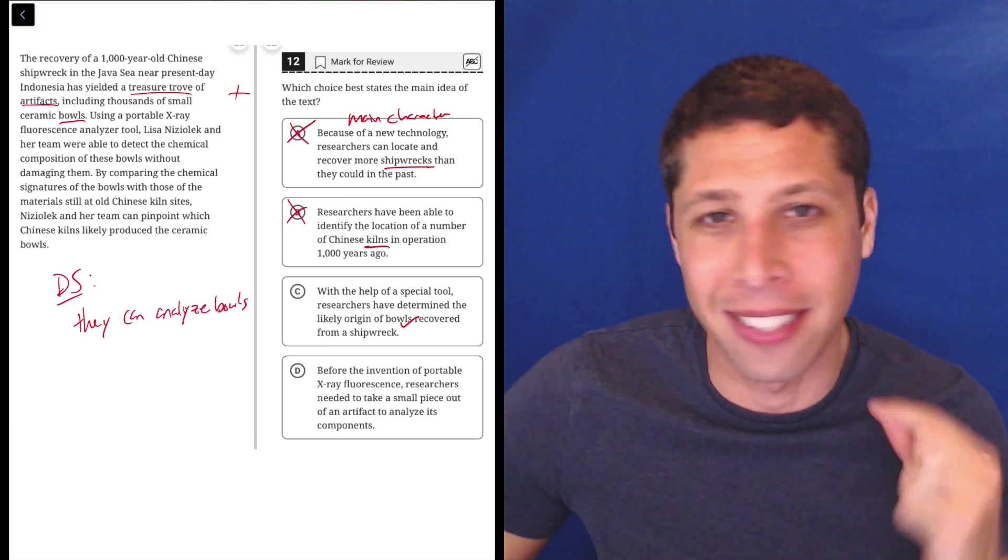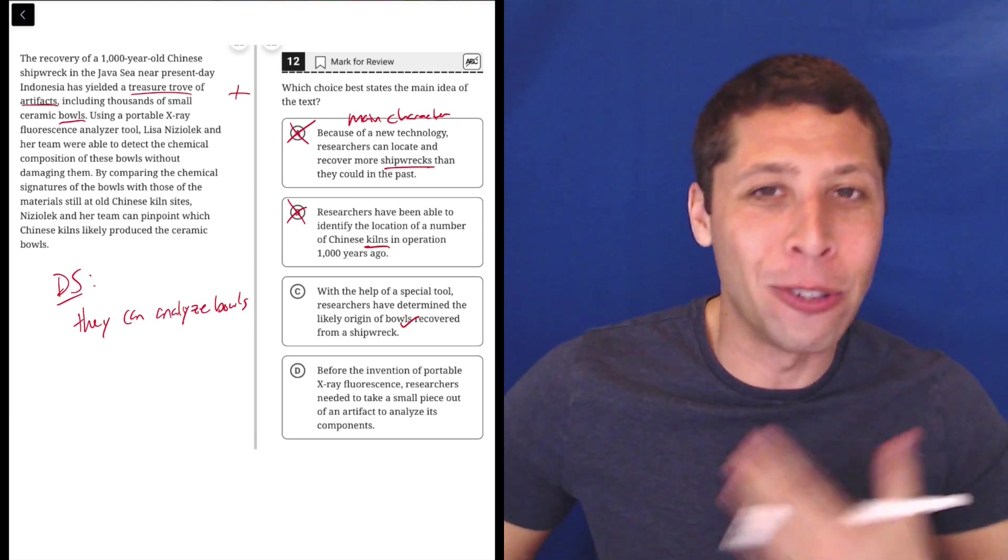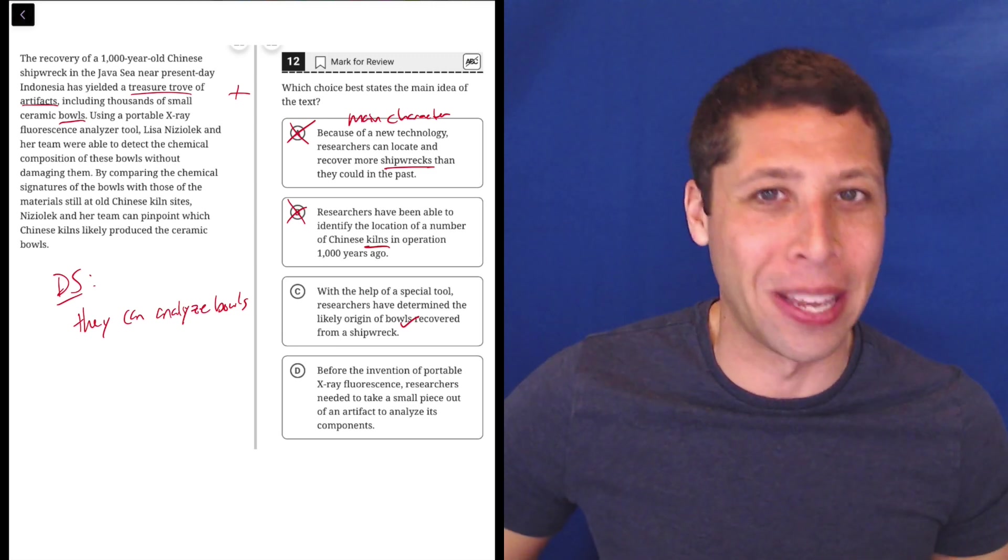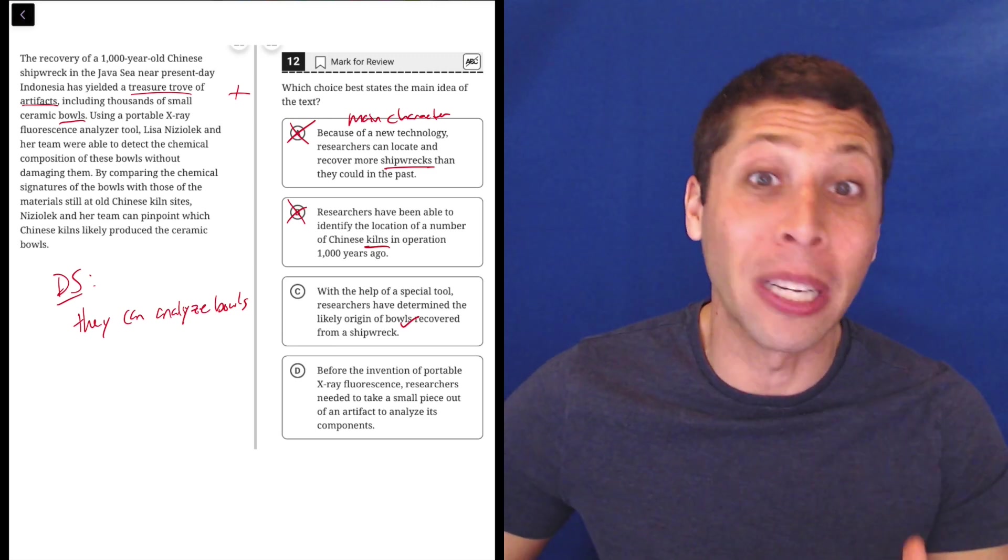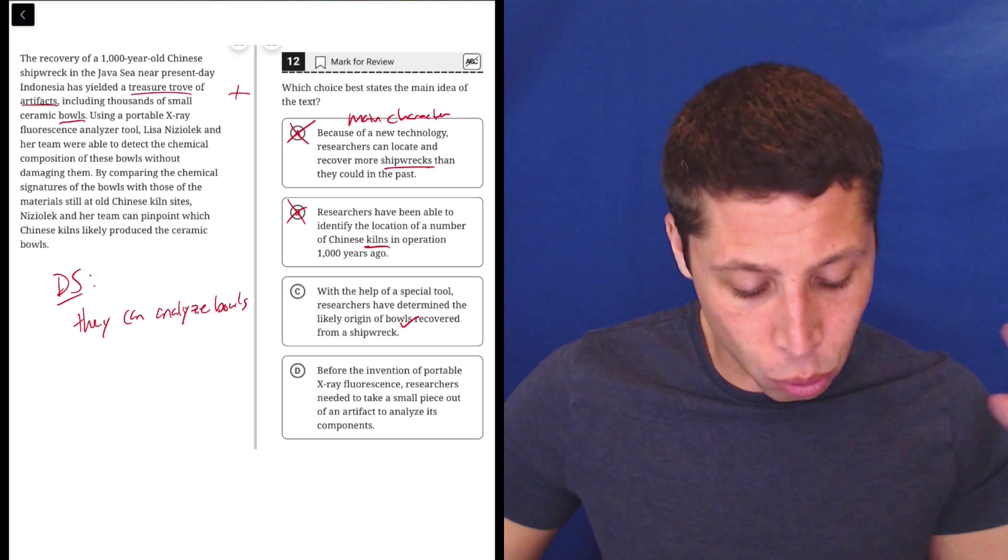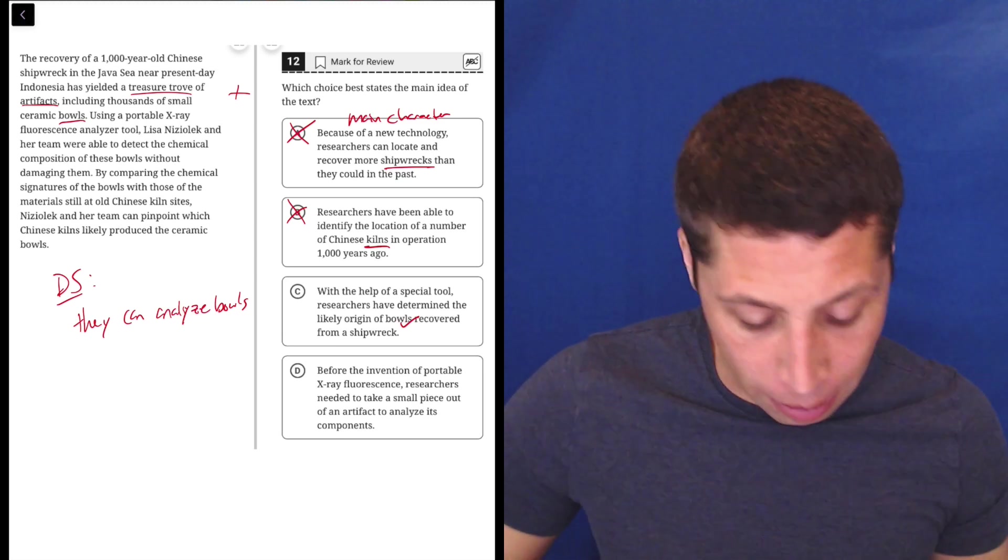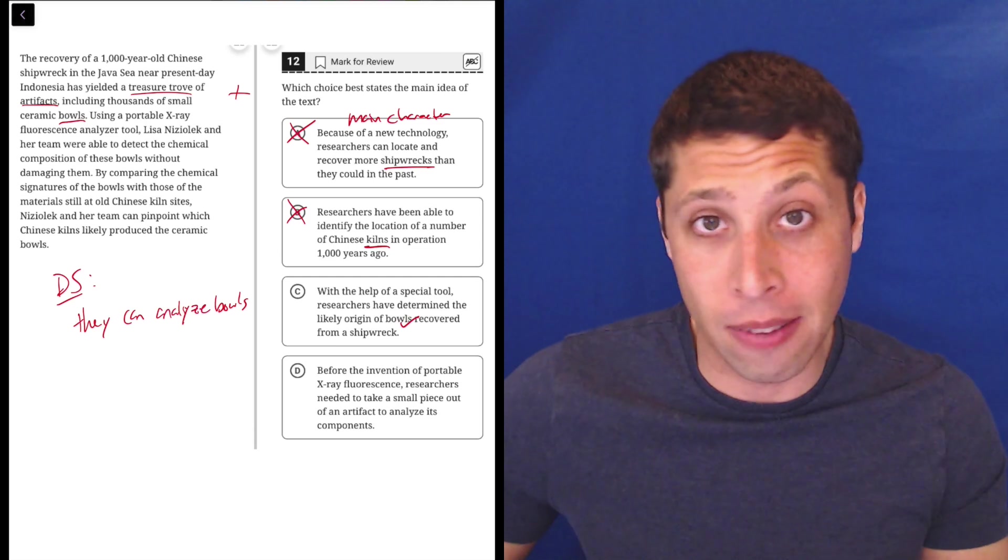Don't try to memorize those kind of complicated, scientific-y sounding things. That's not what it's about. You know what a bowl is and you know what it means to measure how old something is. That's the simple stuff that's going to really matter for these questions. So this seems right. It does talk about the origin of the bowls and they can pinpoint it. So let's just take a look at D and see if that's any better.